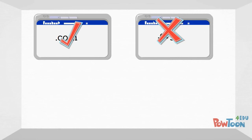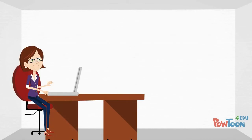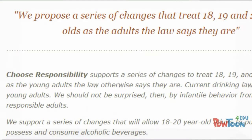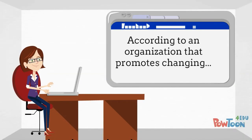You need to evaluate the content of the site, not rely on the domain name. One type of source to be aware of is known as an advocacy website — the website of a group or organization that promotes a specific point of view or agenda. If you use such a source in your work, it is important that you acknowledge the perspective of the source as you use it.